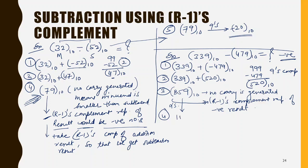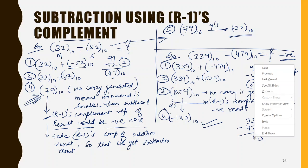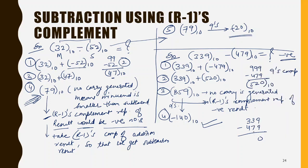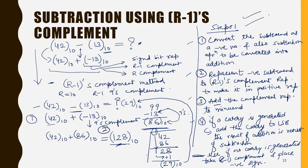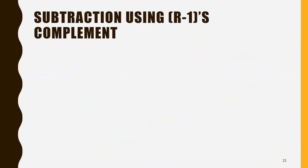Since no carry is generated, we take the 9's complement of 859 to get 140, and we place a negative sign. So the result is minus 140. You can verify: 479 minus 339 equals 140, and since 479 is the larger number, the answer is minus 140. I hope the steps are now clear for performing r minus one's complement subtraction.